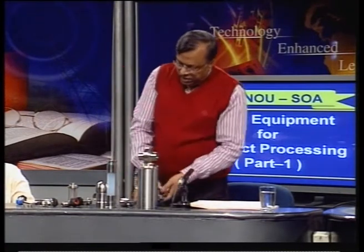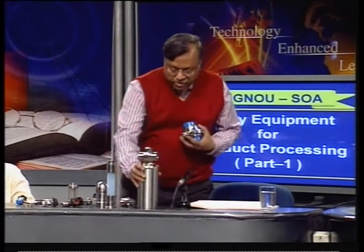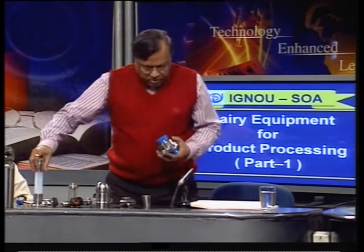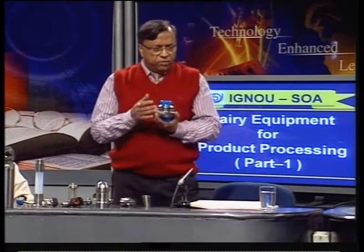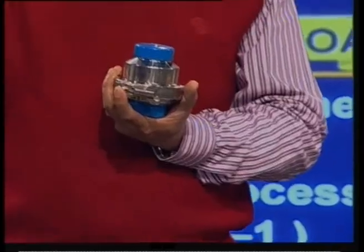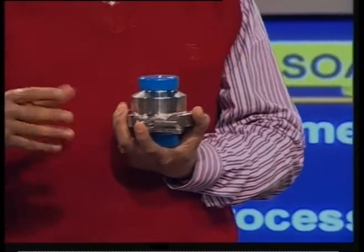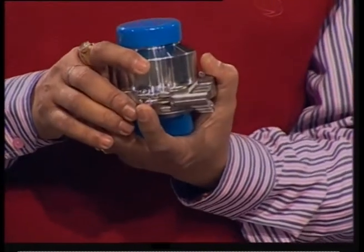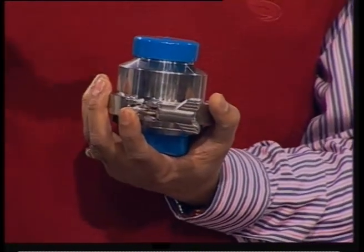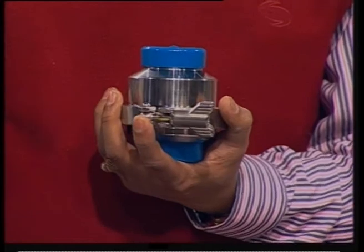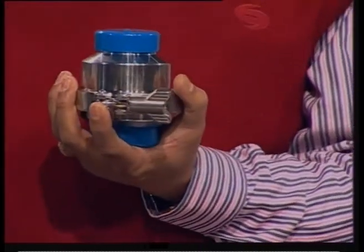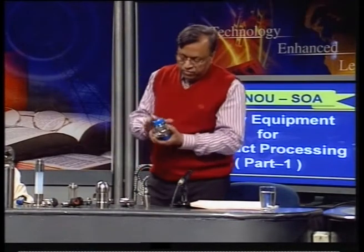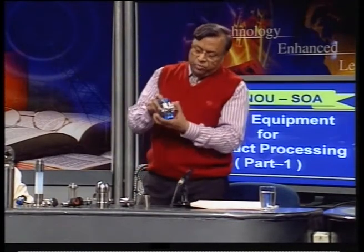Next we have a check valve. The check valve is used in lines where we do not want the product to come back into the system. For example, at the discharge of a milk pump — if you put a check valve, the product going up to the silo will not drain back through the pump to the drain. So we put the check valve to save that product.